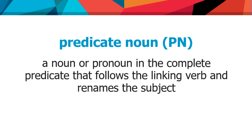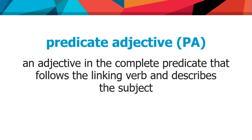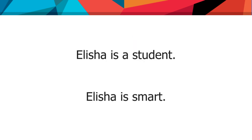Now let's make sure you know what predicate nouns and predicate adjectives are and do some actual labeling. A predicate noun, abbreviated PN, is a noun or pronoun in the complete predicate that follows the linking verb and renames the subject. 'Elisha is a student' — subject, linking verb, predicate noun — because it renames Elisha. A predicate adjective, abbreviated PA, is an adjective in the complete predicate that follows the linking verb and describes the subject. 'Elisha is smart' — subject, linking verb, predicate adjective — it describes him, it doesn't rename him.